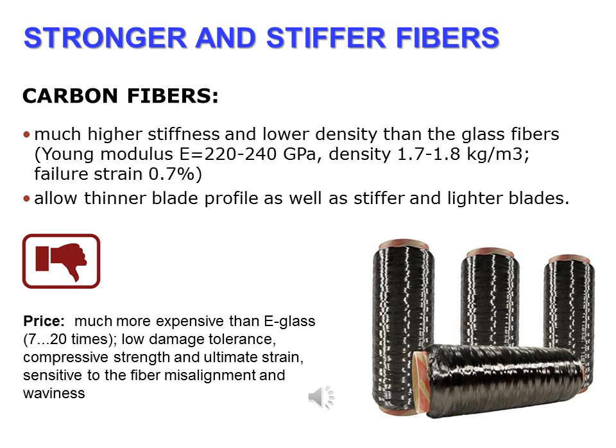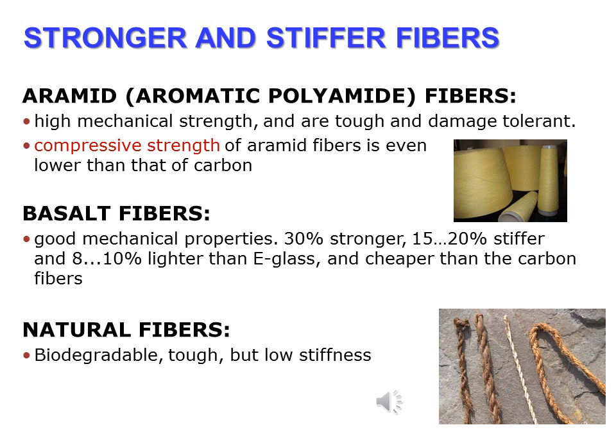Carbon fibers attracted large interest from industry and the research community as a very promising alternative to glass fibers. Carbon fibers have much higher stiffness and lower density than glass fibers, allowing thinner blade profiles as well as stiffer and lighter blades. However, they have relatively low damage tolerance, compressive strength, and ultimate strain, and are 7 to 20 times more expensive than E-glass fibers. Carbon fiber-reinforced composites are very sensitive to fiber misalignment and waviness; even small misalignments lead to a strong reduction of compressive and fatigue strength.